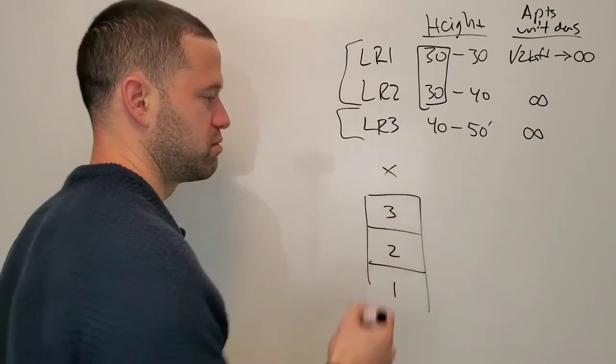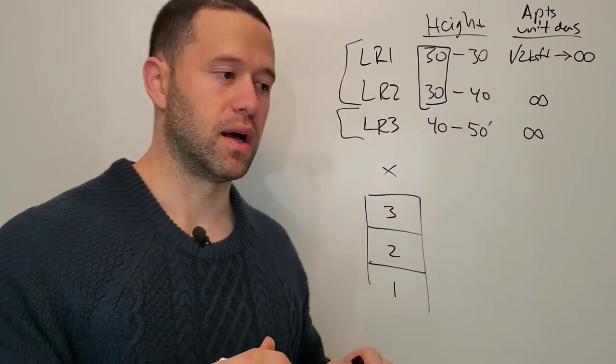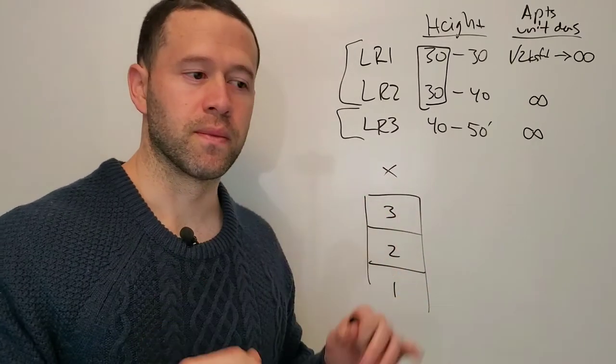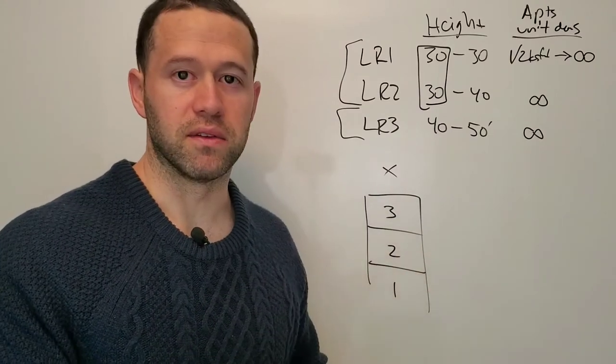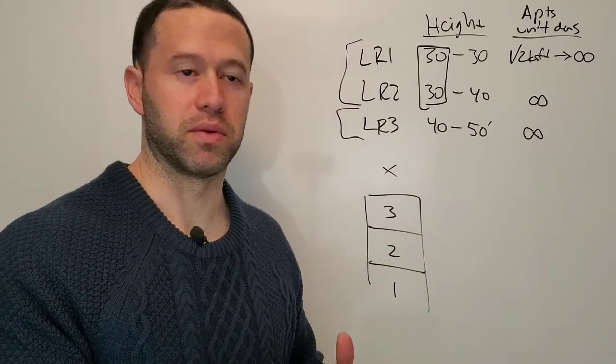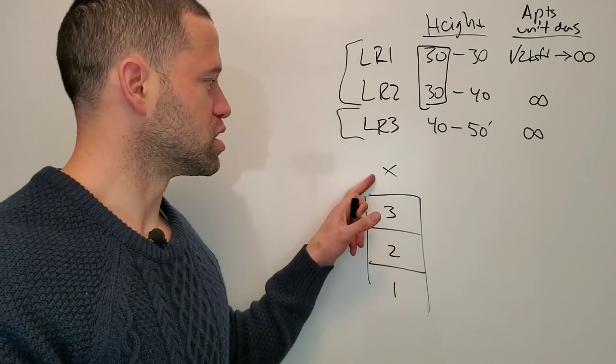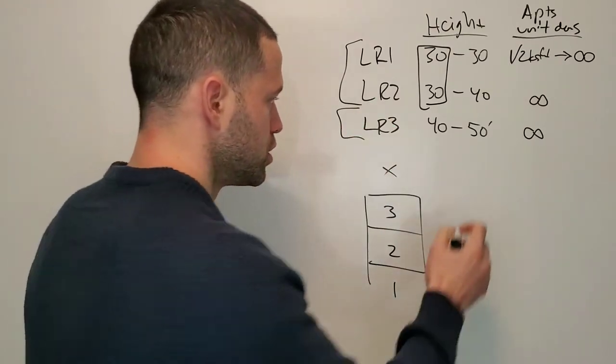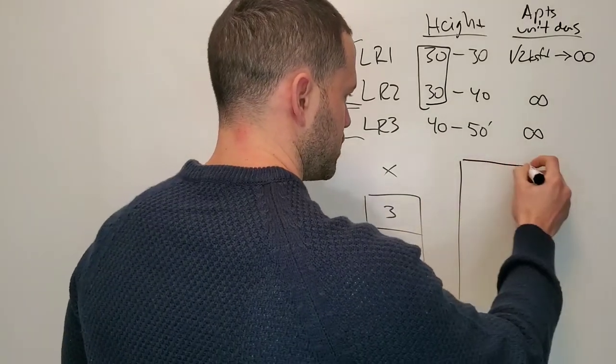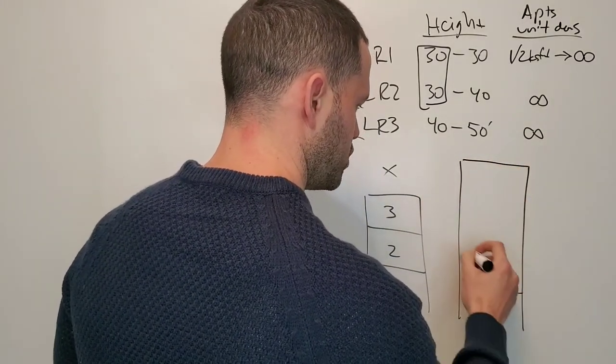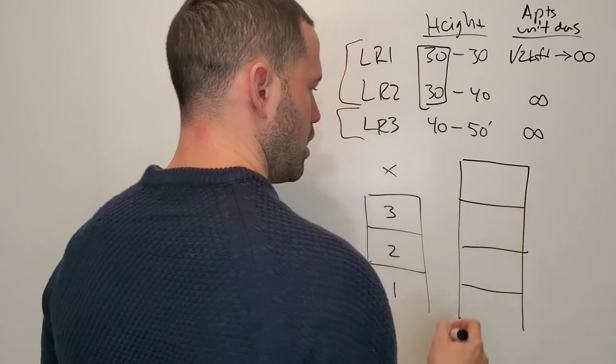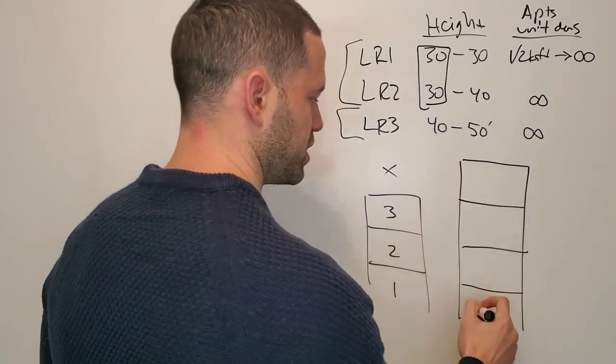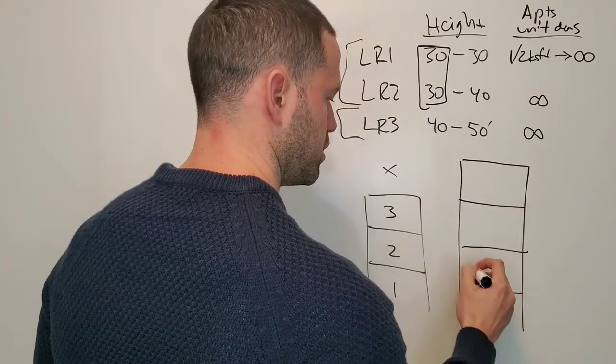As a developer, your job is to maximize the value of every lot you're developing. It should hurt your soul to just throw away ten feet of buildable height. What you might end up doing is change the equation where you do four levels, but instead of building a townhome, you just build four levels of apartments.